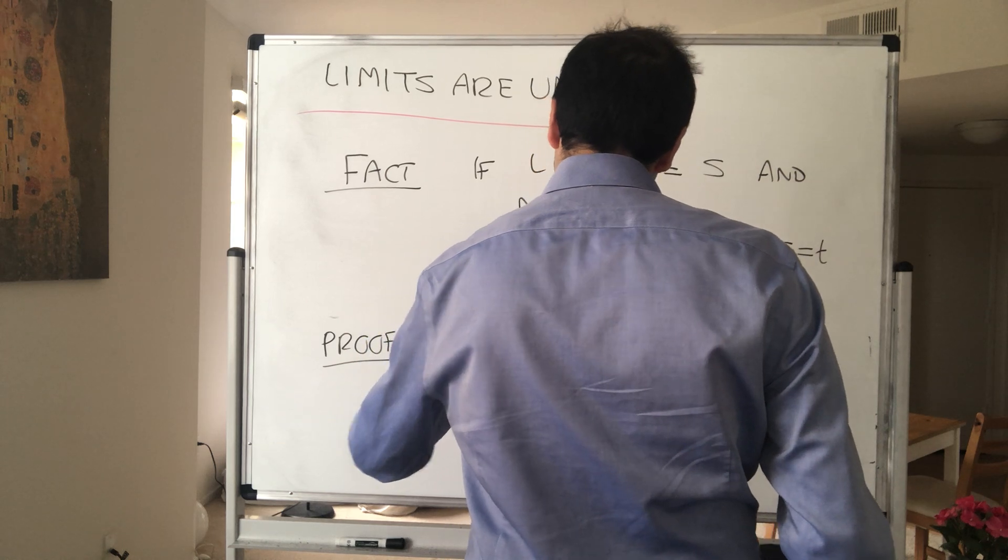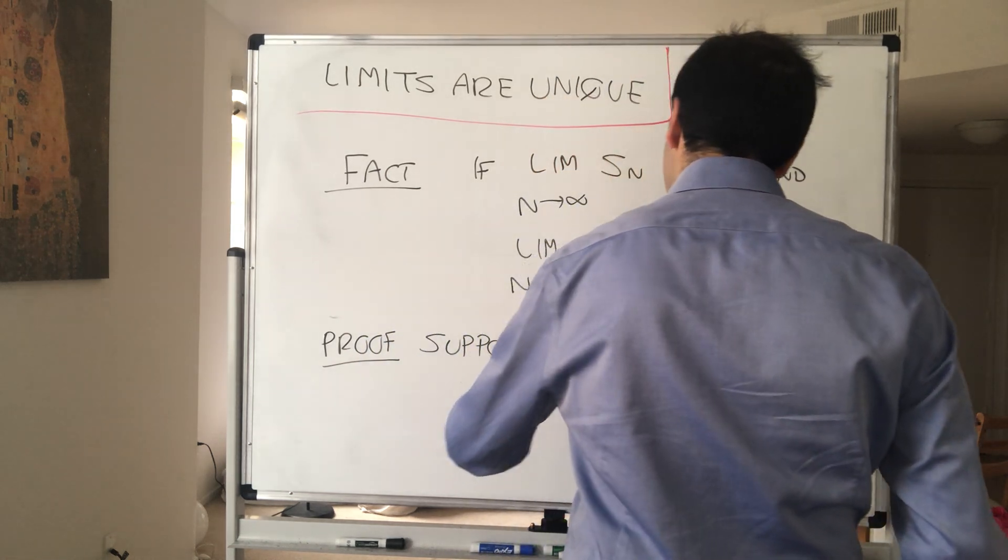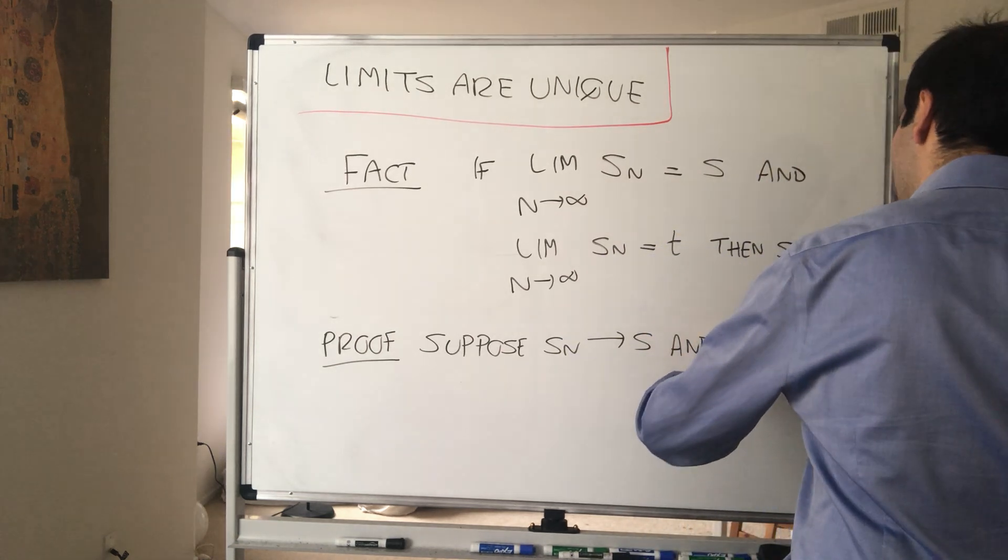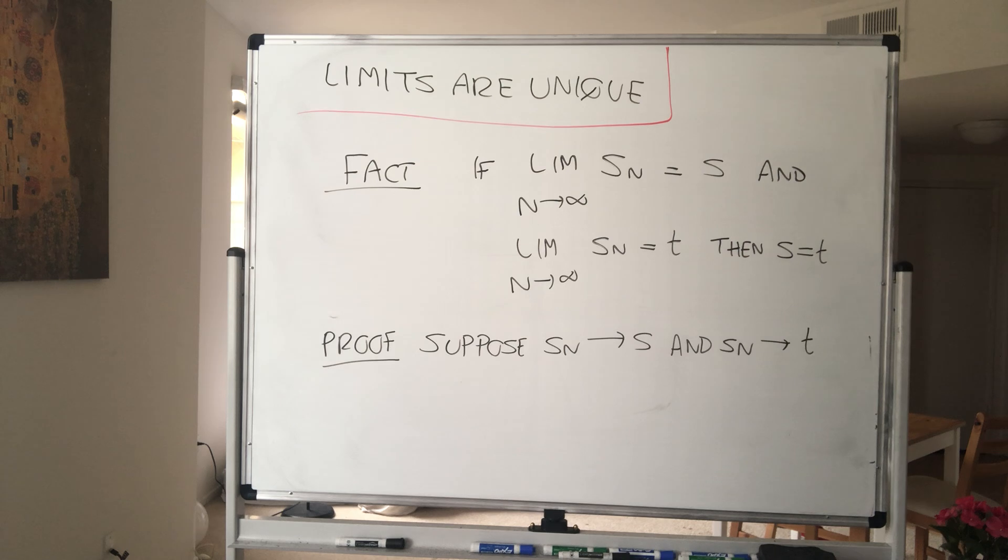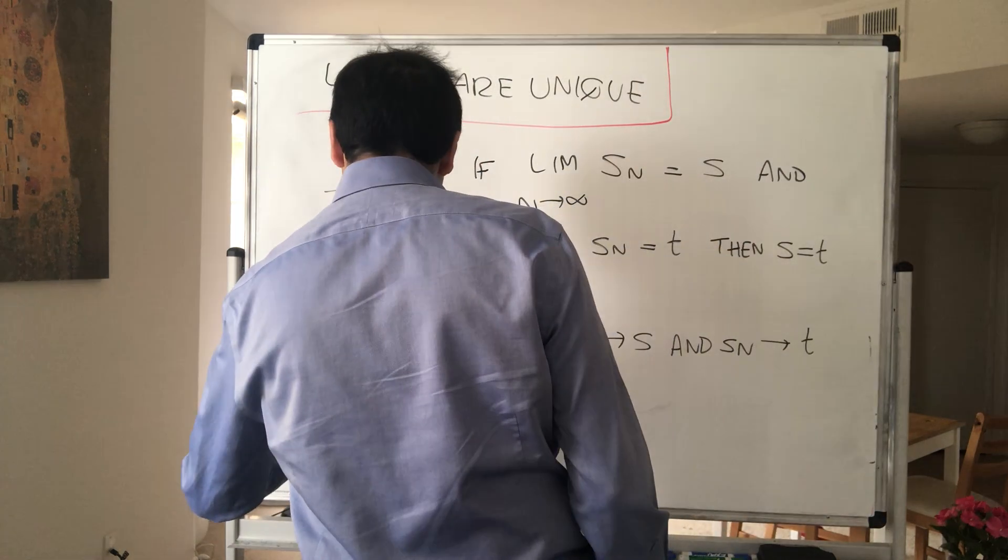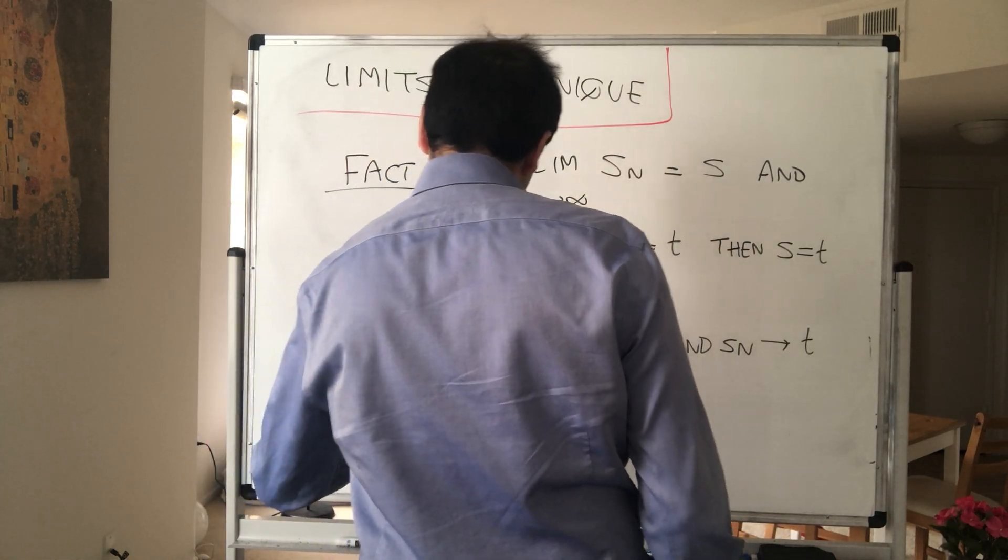Suppose, again, Sn converges to S and Sn converges to T. And in particular, what this means is for all Epsilon something happens. So let Epsilon be given.